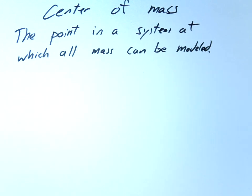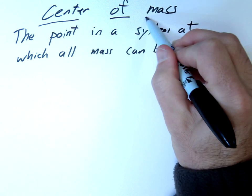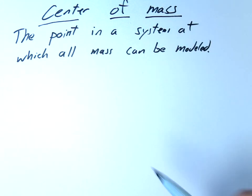Today we're going to look at the center of mass and how it relates to conservation of momentum. So let's just define it. The center of mass is essentially the point in a system in which all of our mass can be modeled.